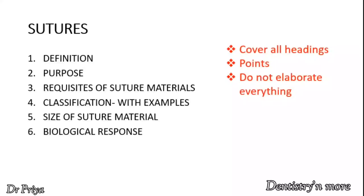Then classify sutures. You can classify sutures into natural, synthetic, absorbable, non-absorbable, monofilament, and multifilament. Also write two or three examples under each classification. Then mention the size of suture materials — suture materials are available in various sizes depending upon tensile strength. The standard for identifying varying tensile strength is by the number of zeros, so include a note about the size of suture material.